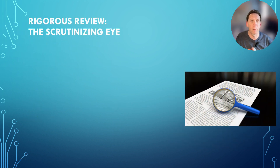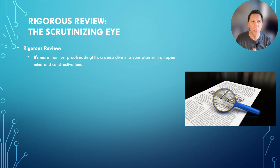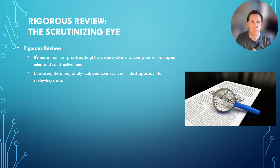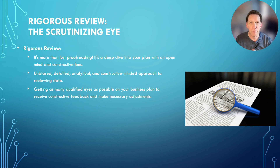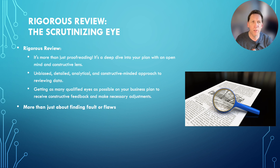Let's talk about rigorous review — the scrutinizing eye. A rigorous review is more than just proofreading; it is a deep dive into your plan with an open mind and a constructive lens. You need to be unbiased, detailed, analytical, and constructive-minded to review your data. You want to get as many qualified eyes as possible on your business plan to receive constructive feedback and make necessary adjustments.